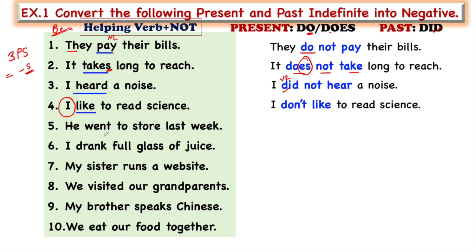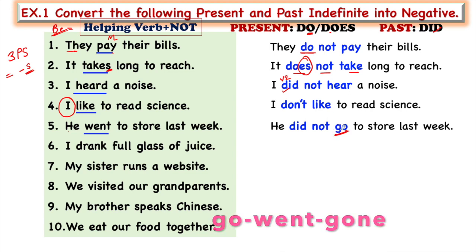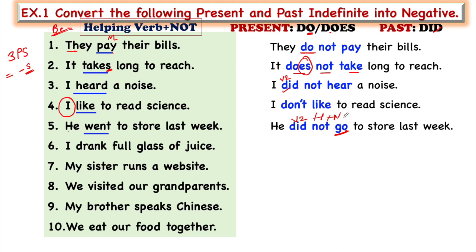'He went to the store last week' — 'went' is the second form of verb, therefore this is past indefinite tense. We take the help of 'did': 'He did not go to the store last week.' 'Went' is the second form, so we use the first form 'go,' because 'did' is already second form and two second forms cannot come together. The formula is: helping verb plus not plus main verb.